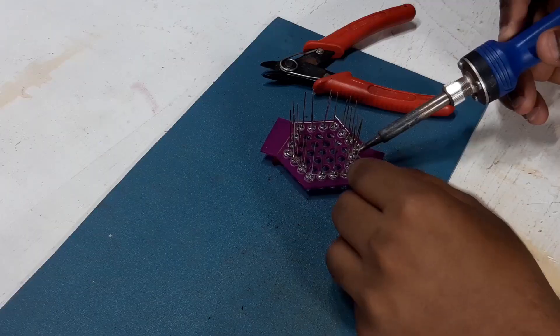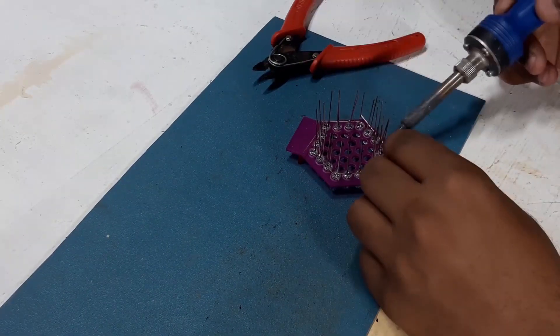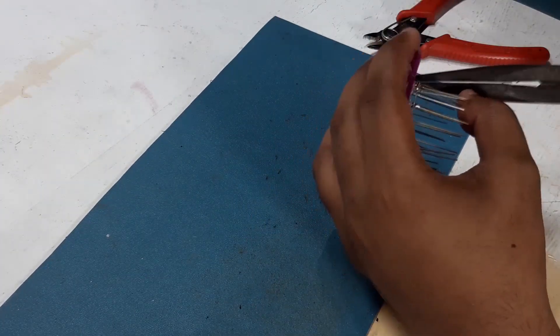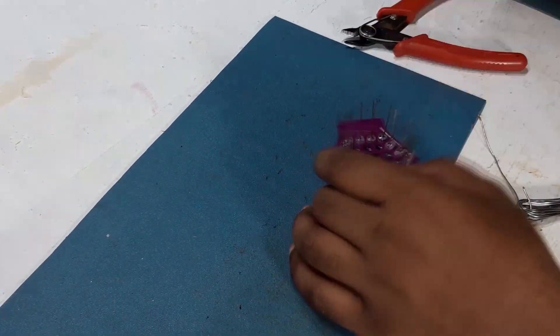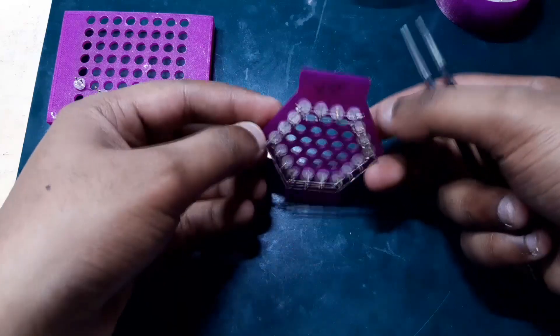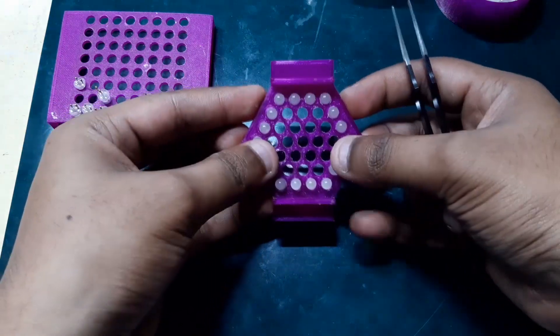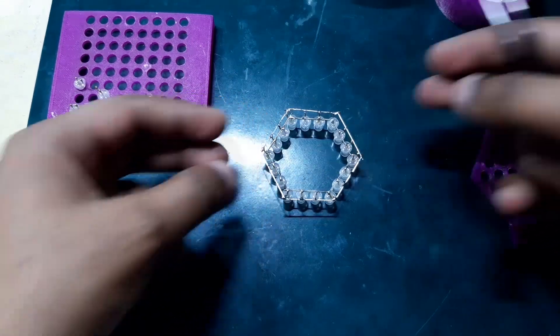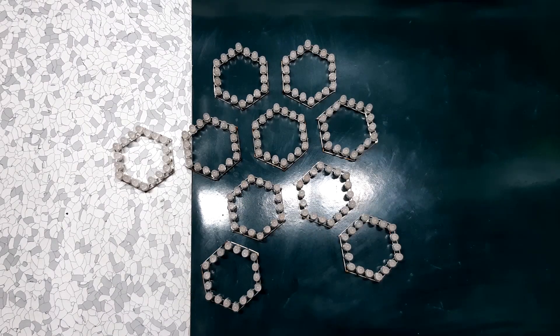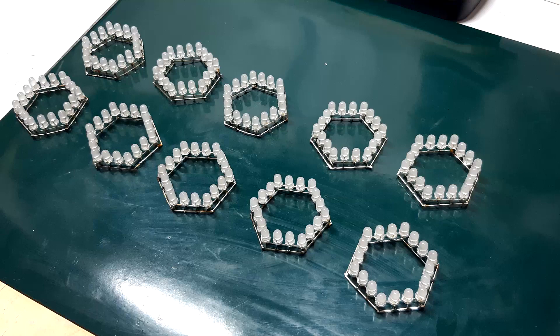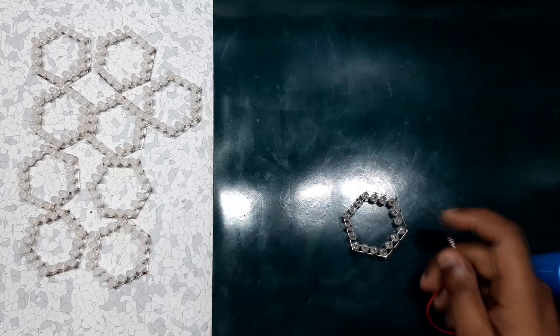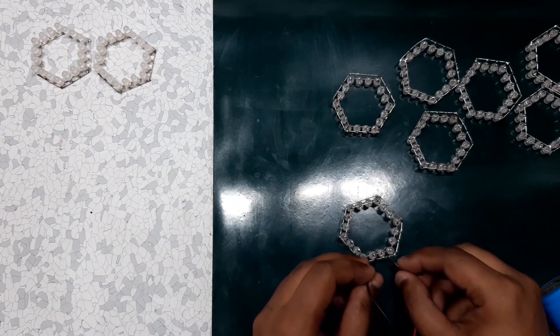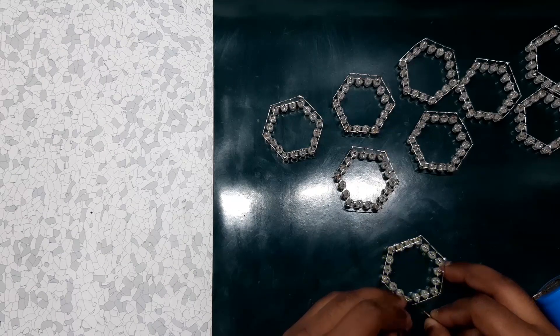So yeah, this is how I made the first level. After I finished one level, I repeated this whole process and made 10 of these. After that, I tested each one of them one last time and now it's time to assemble the tower.